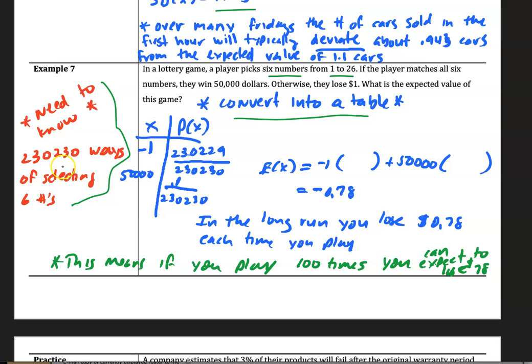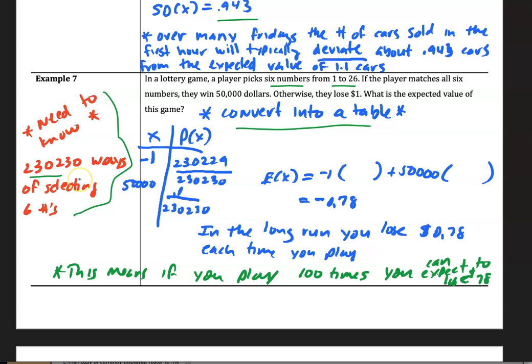What we learn through other mathematics is that there are 230,230 ways of selecting six numbers.